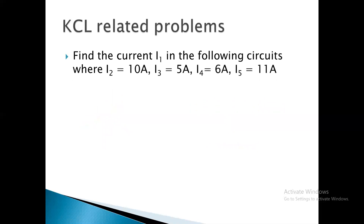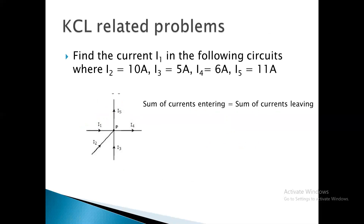We have a problem to solve: a circuit node B has 5 branches connected and we need to find I1. Four branches are given with known values. Applying KCL: sum of current entering equals sum of current leaving. The currents entering are I1, I2, and I3, and the currents leaving are I4 and I5.